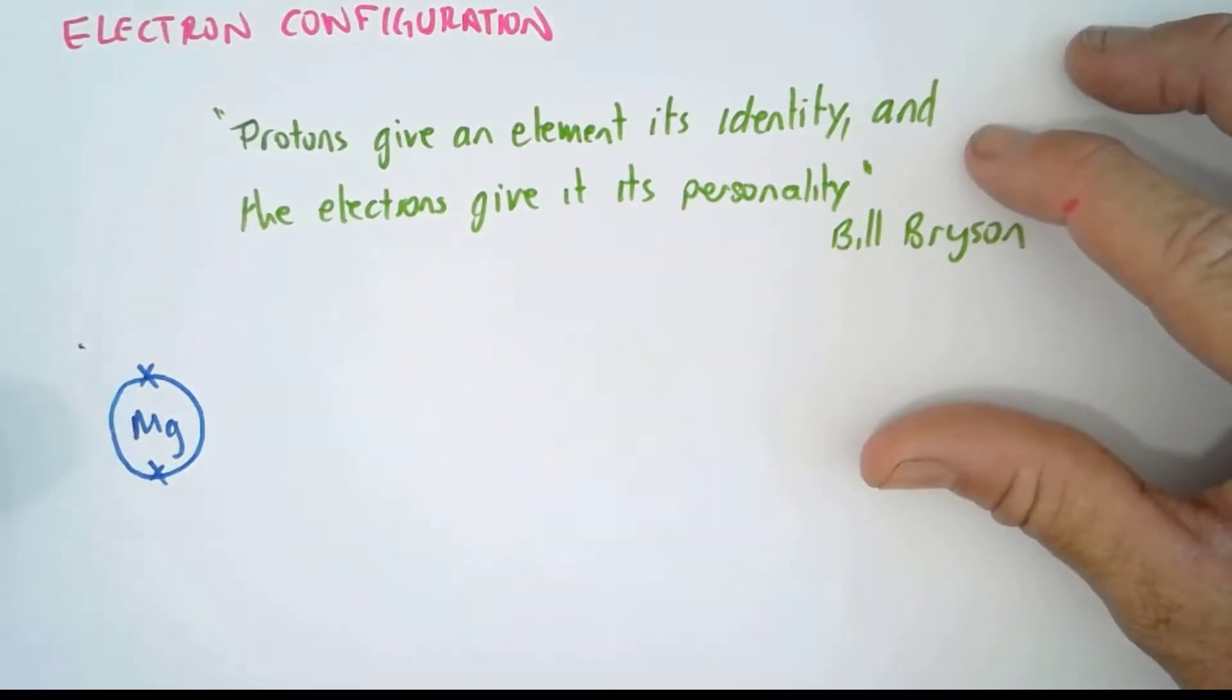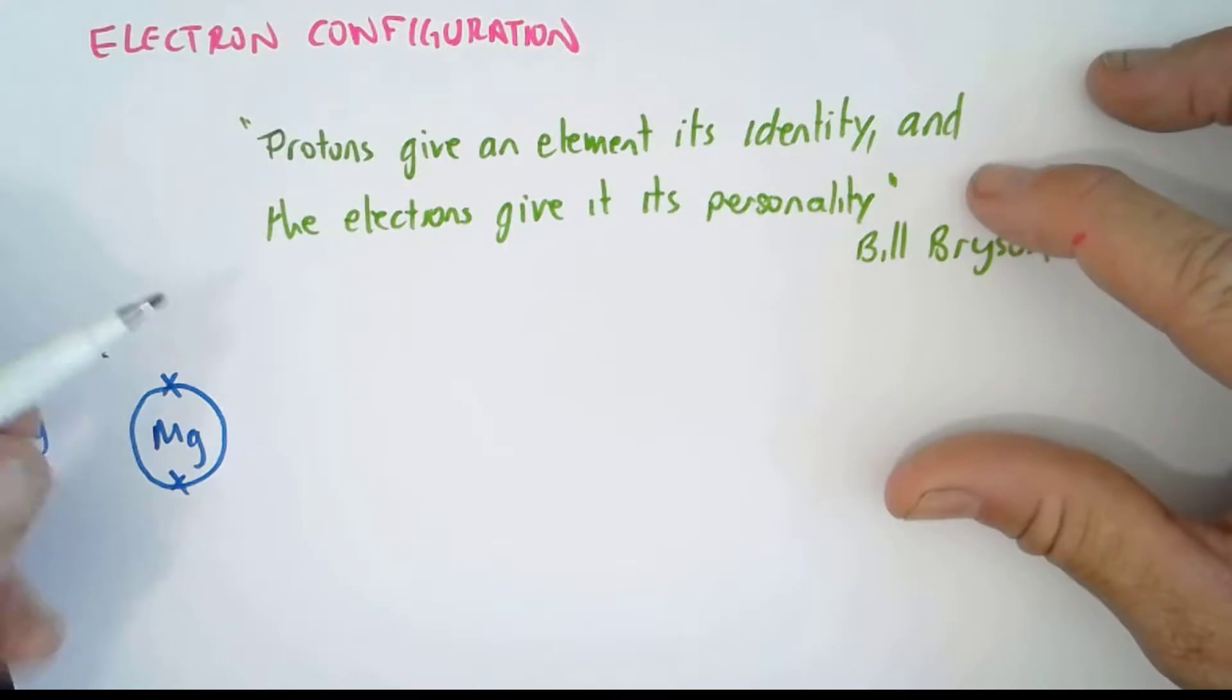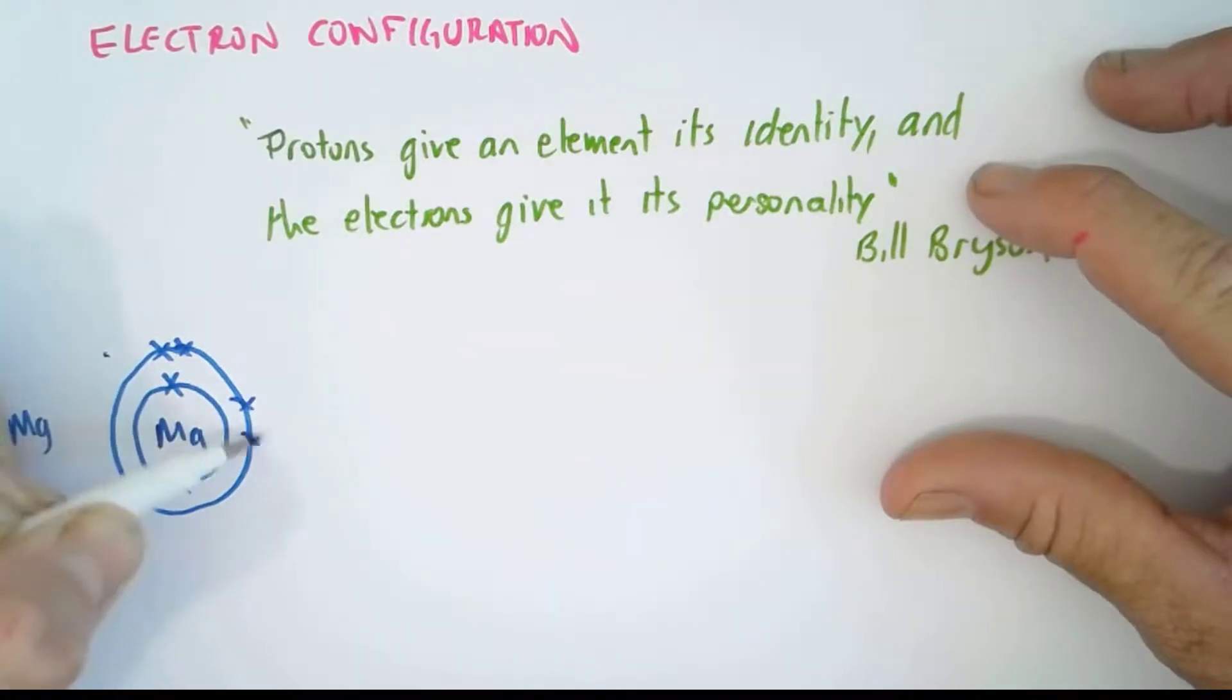So magnesium, remember magnesium has an atomic number of 12, so that means that we've got 2 in the first shell, and then 8 in the second shell, that gives us a total of 10, and we'll need 2 in the third shell.